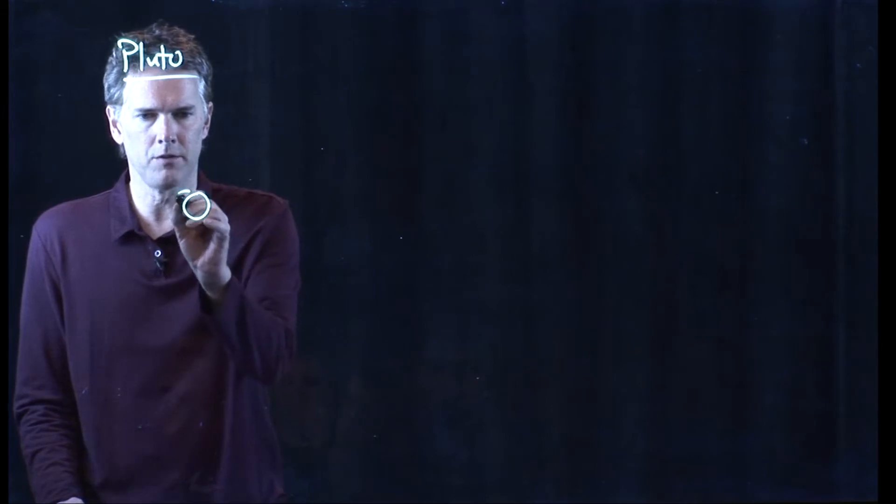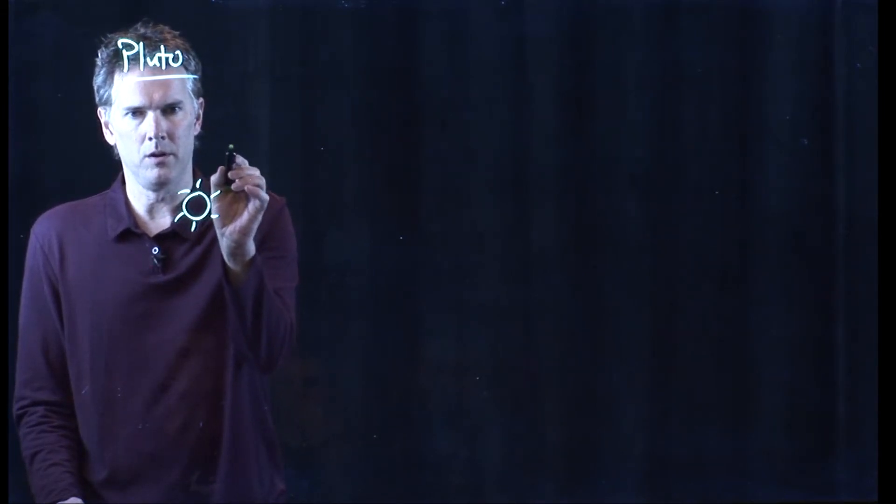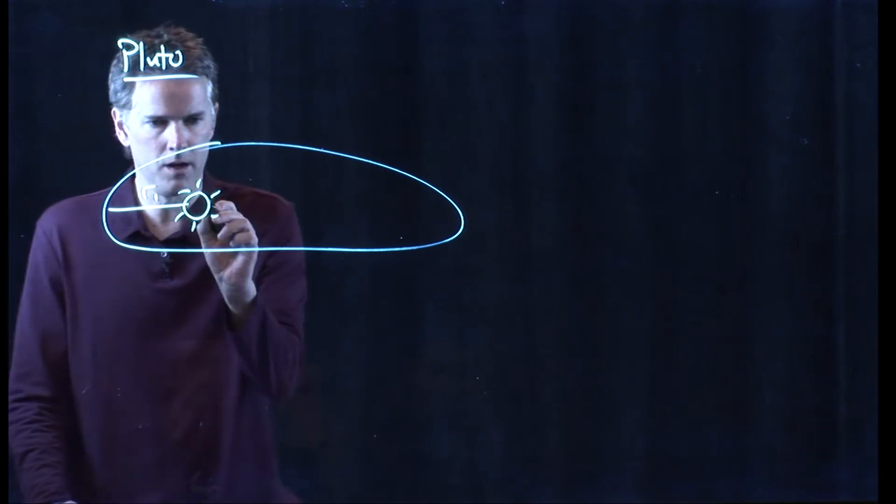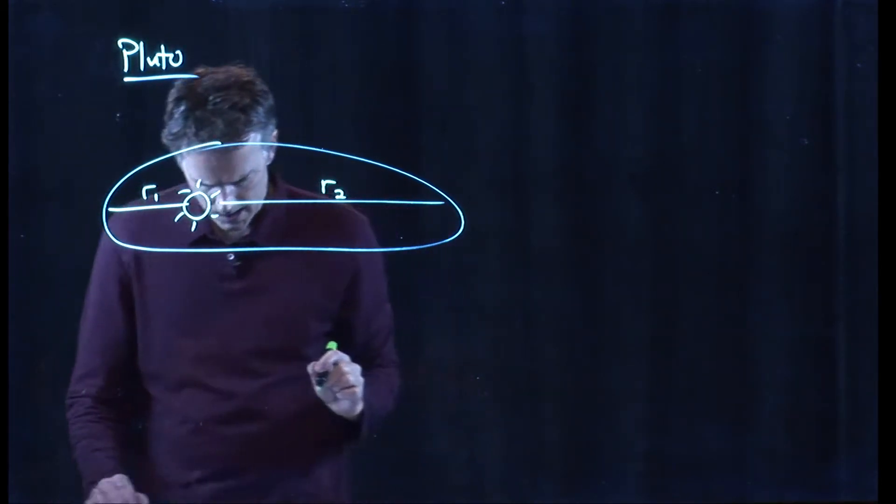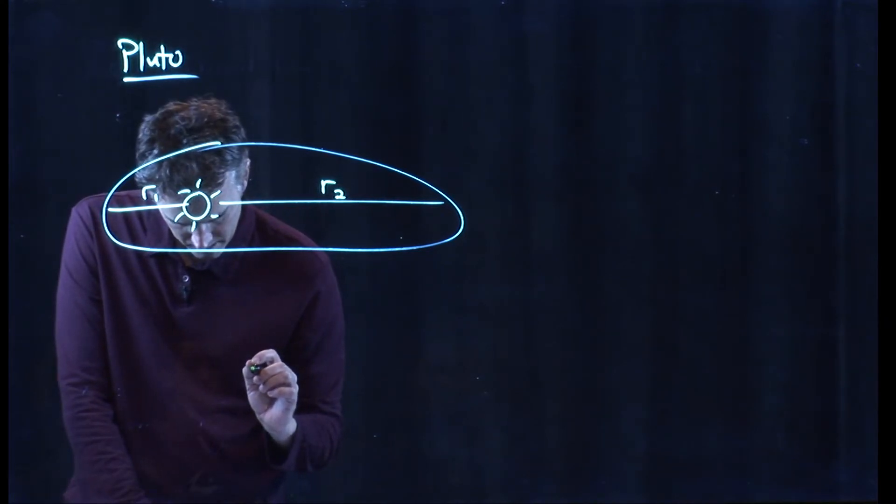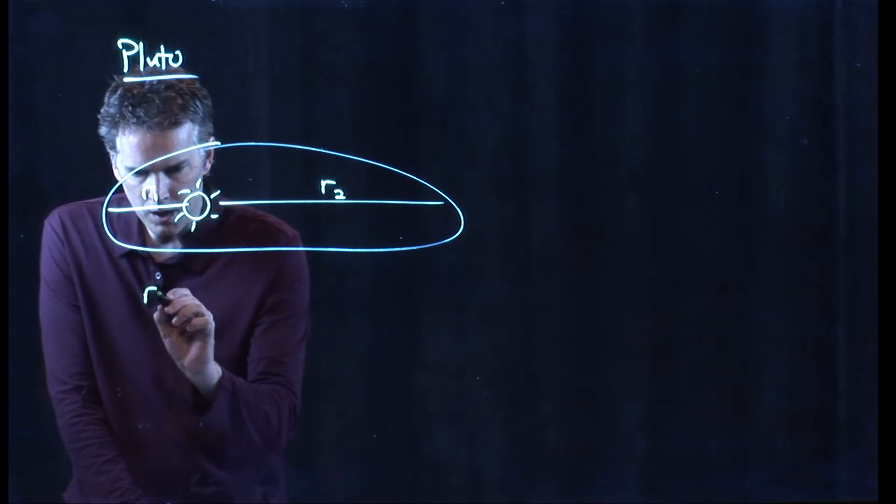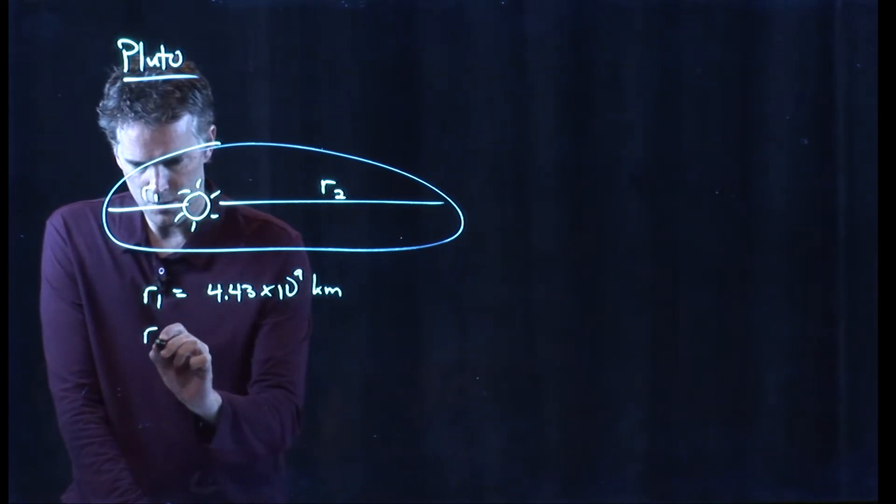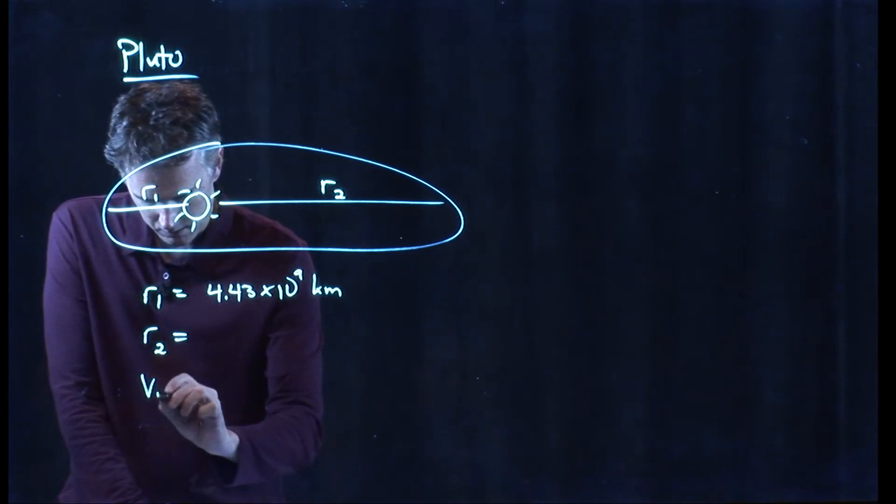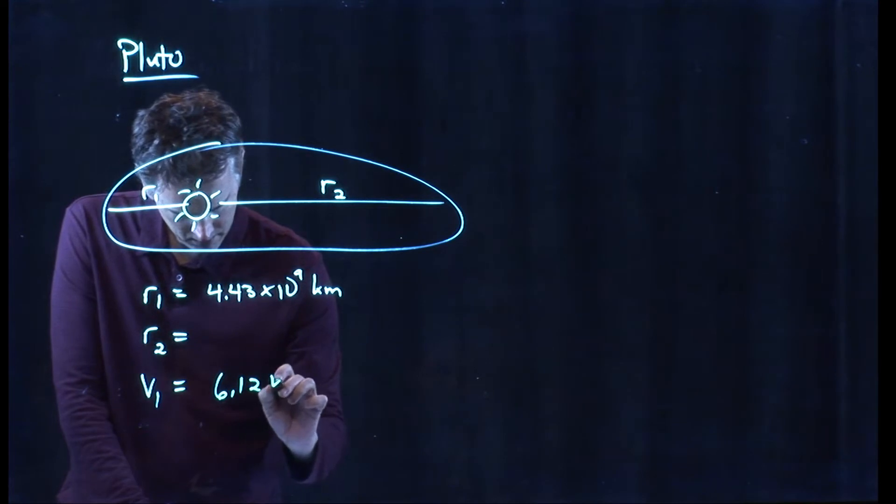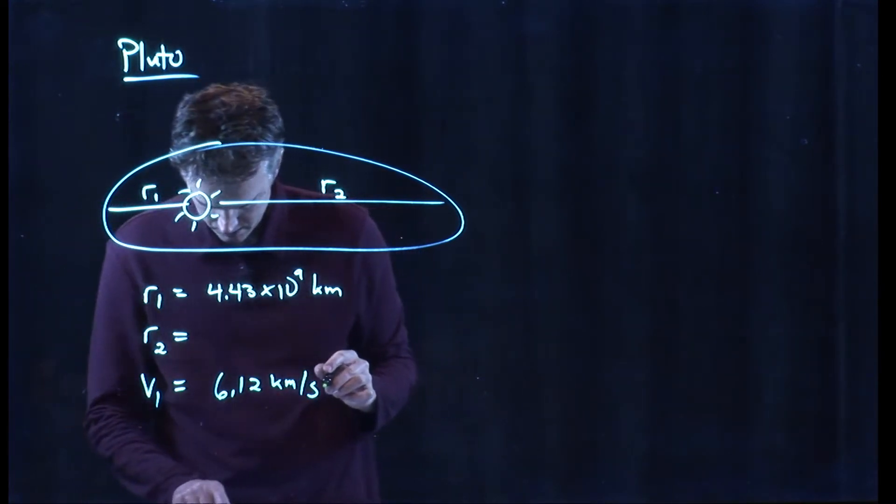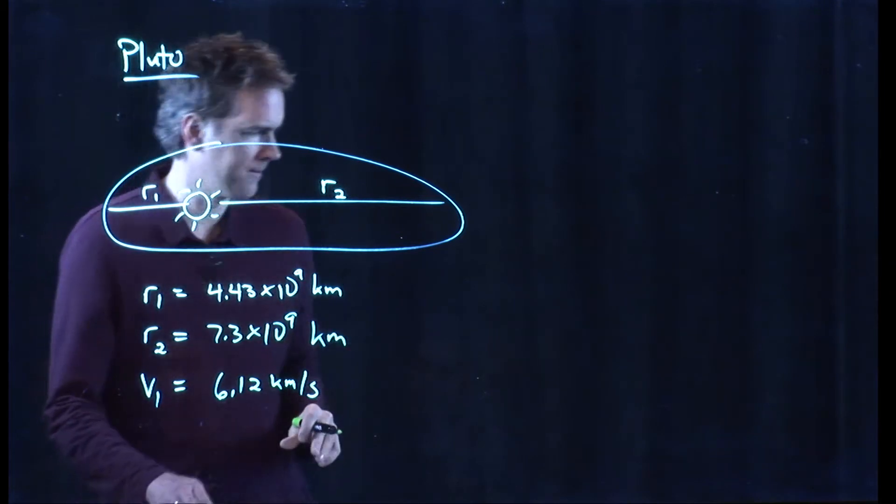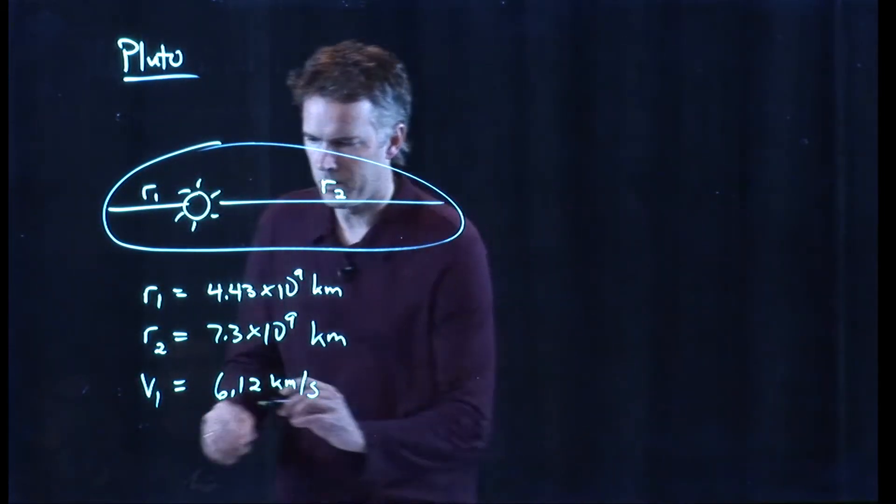Okay, so the Pluto problem looks like this. Here's our Sun. Pluto is in this elliptical orbit about the Sun and there is some close approach. We'll call that R1. There is some distance R2 and what they tell us is the following. R1 equals 4.43 times 10 to the 9 kilometers. R2 is 7.3 times 10 to the 9 kilometers. V1 is 6.12 kilometers per second. And we want to figure out what V2 is.